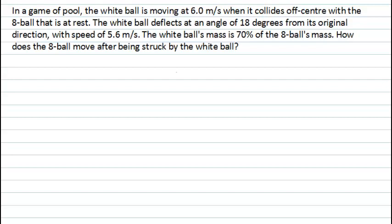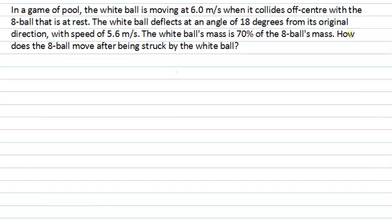This VizCast will look at a collision problem in two dimensions. We have a ball — the white ball — moving at 6 metres per second, and it's going to collide off-centre with the 8-ball, which is initially not moving at all.